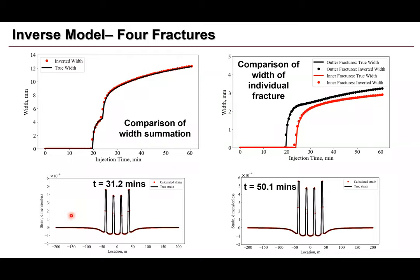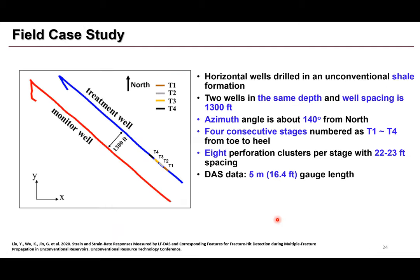The strain versus location plot shows the true strain (black line) and the strain calculated by our model (red dots) at two different times — both show very good match.